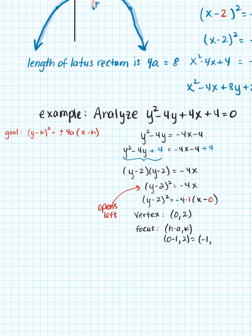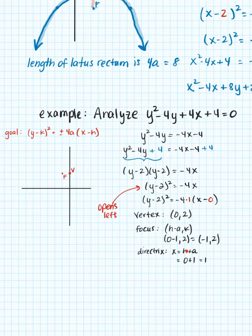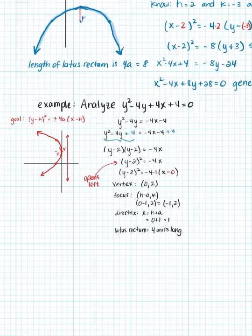And my a value here is 1. So to find the focus, I'm going to go ahead and subtract 1 from h, so 0 minus 1, and then my k value stays the same, which is 2. So my focus is (-1,2). And then I can calculate my directrix using the formula. So h is 0 plus the 1 for a tells me the directrix is the line x = 1. So this parabola opens left because of the negative in the front here and because y is squared. If x is squared, it opens up or down. But if y is squared, it opens right or left. So if I draw my directrix and I have my vertex here at (0,2), and then my focus is at (-1,2), I've analyzed the parabola.